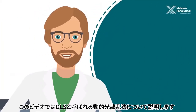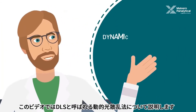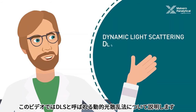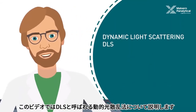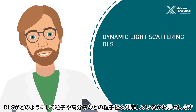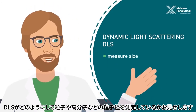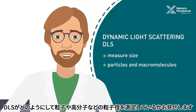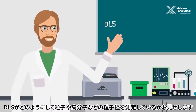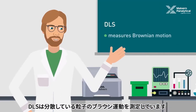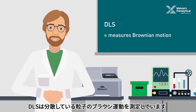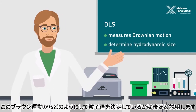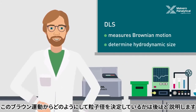This video will explain the technique of dynamic light scattering, or DLS for short. I'll show you the basics of how DLS works and how you can use it to measure the size of your particles and macromolecules. DLS measures the Brownian motion of particles in a dispersion and uses this information to determine their hydrodynamic size.